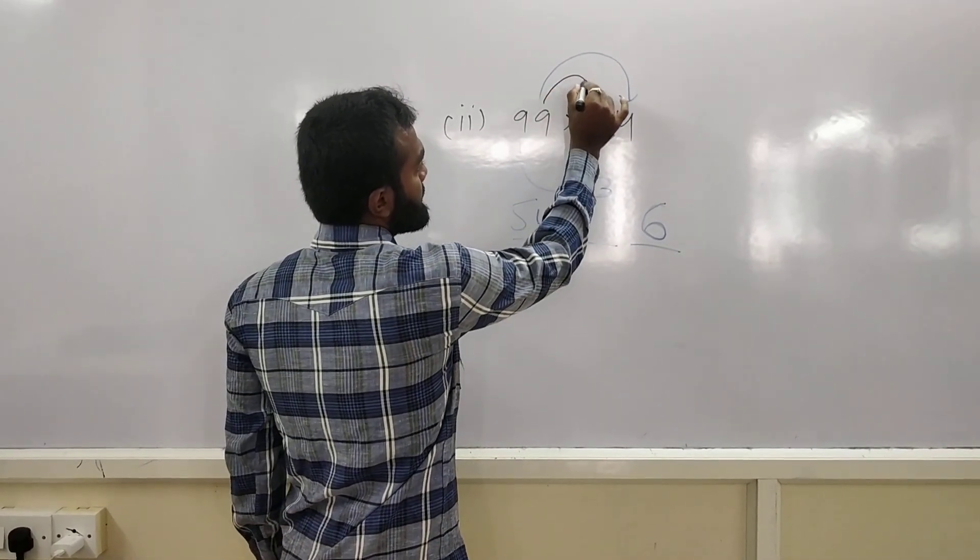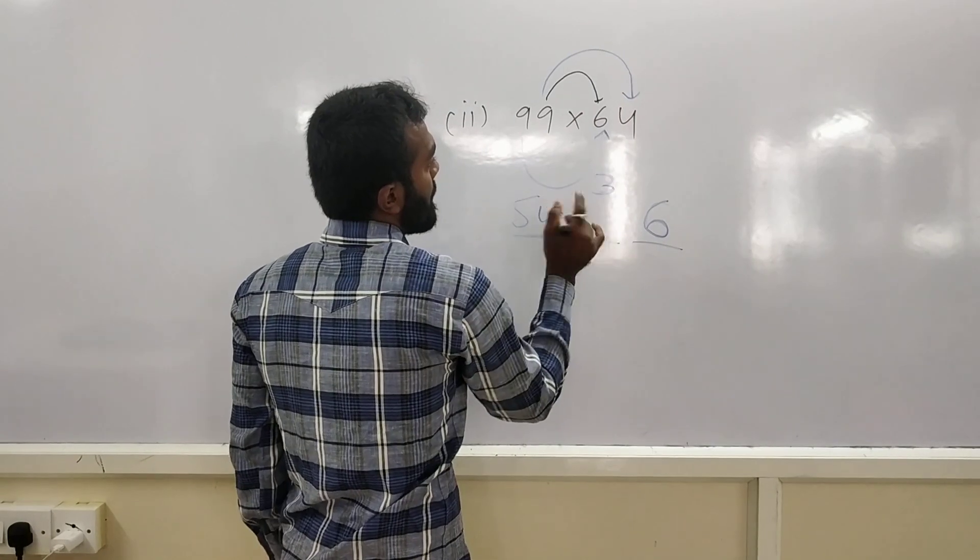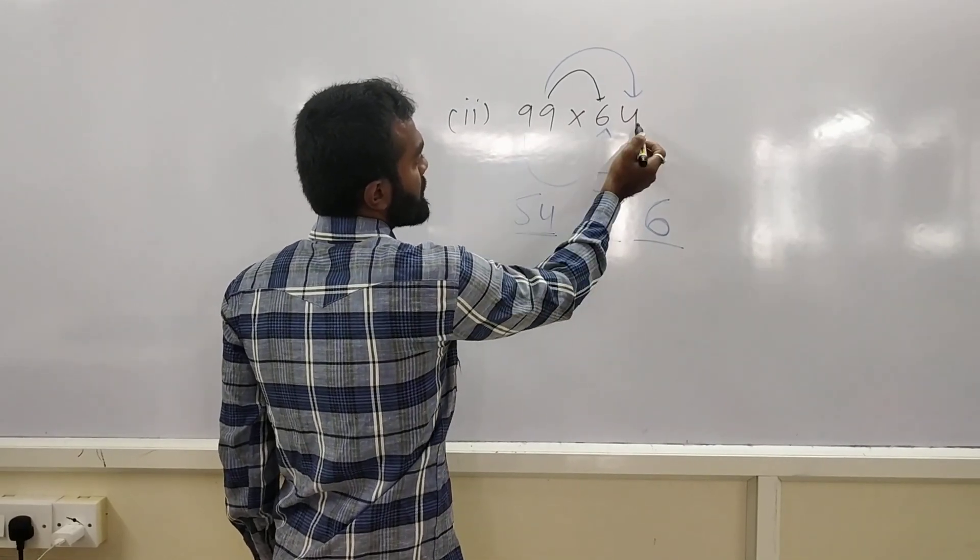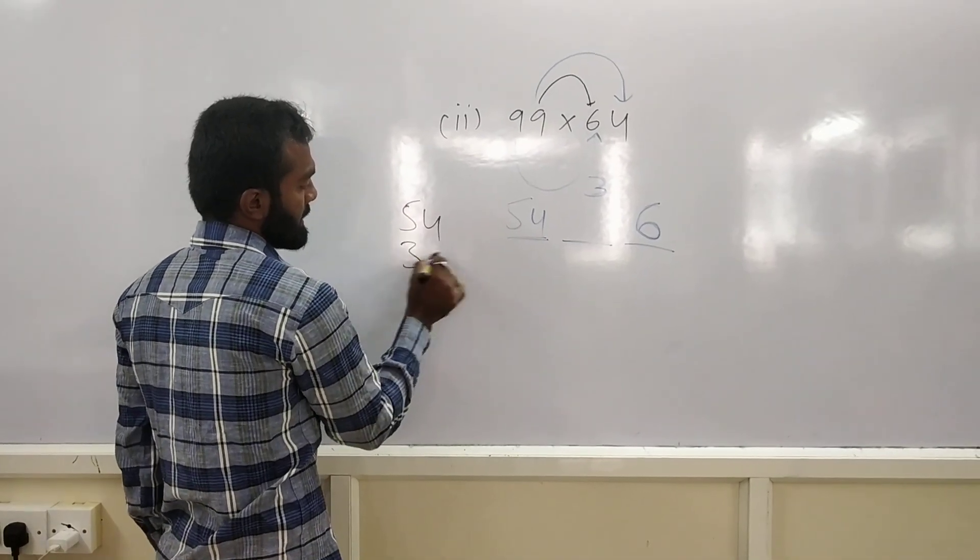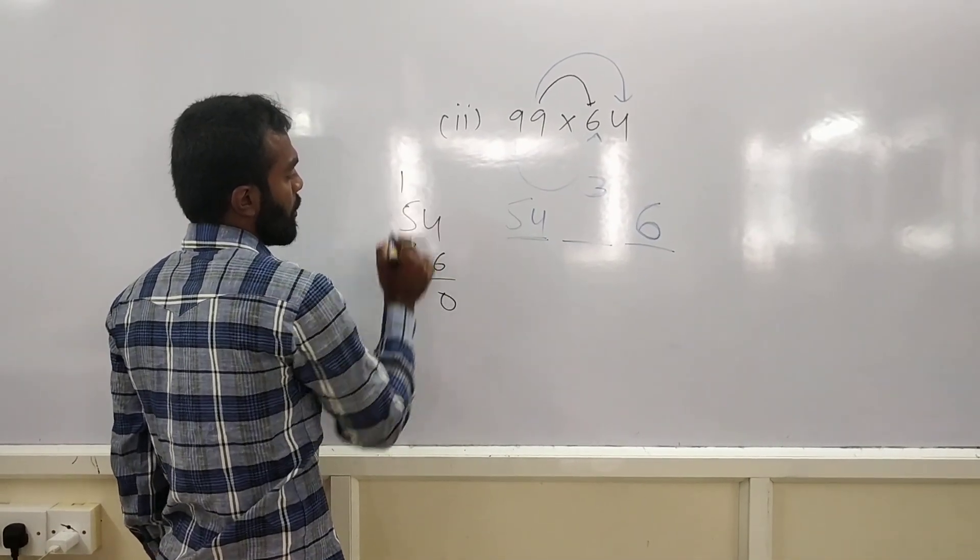multiply 9, 6's are 54. Plus. 9, 4's are 36. 36. 54, plus 36. Give you the result. 0, 1.